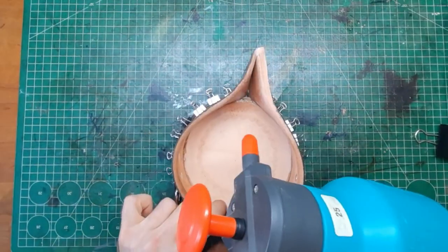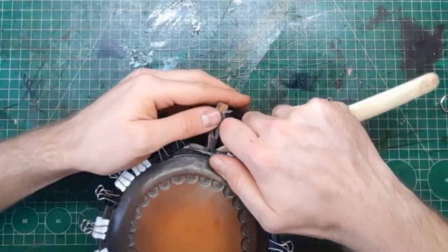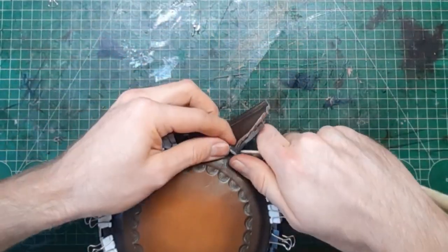Where the ends of the side strap come together, you want to moisten the leather a little bit and then form it really close together and use a bone folder to help you with that.